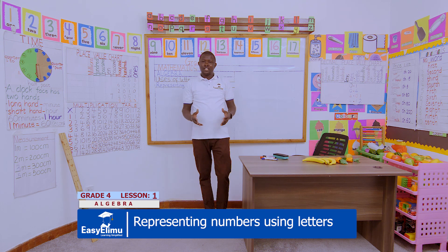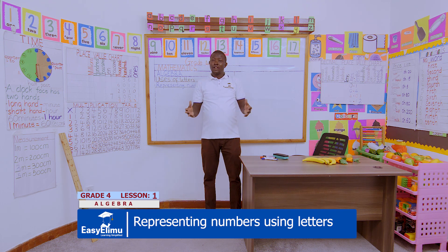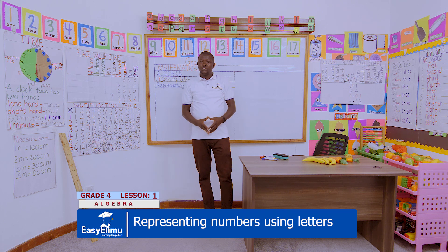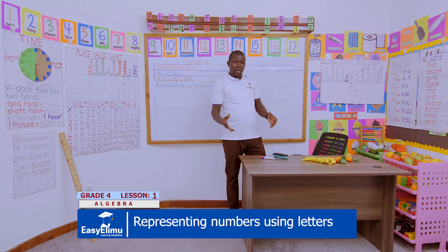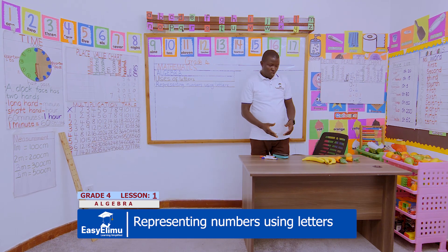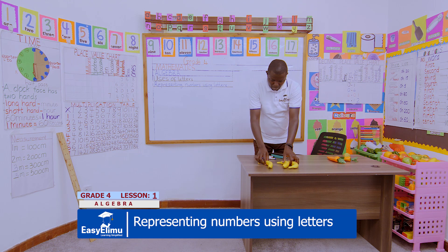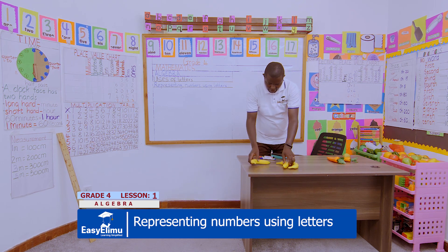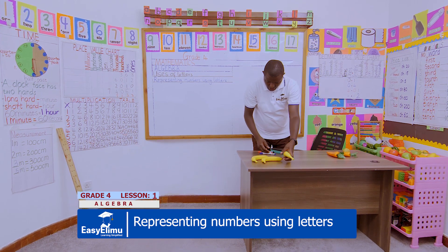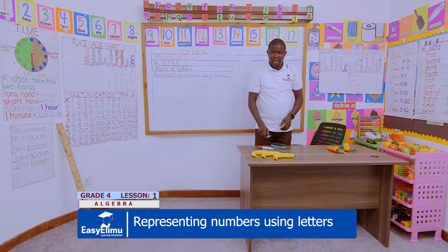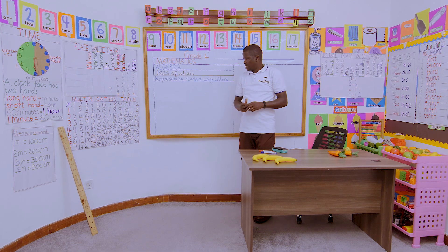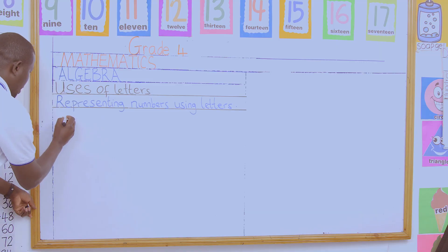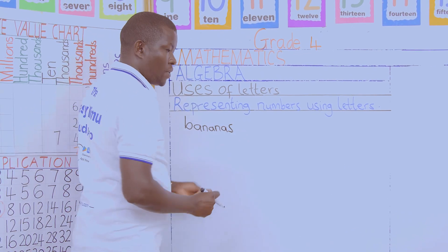To start, remember when you were in lower classes in a previous grade, you identified several different items. I would like you to pair up in two and observe. I have some bananas with me, and I would like us to represent these bananas using letters.